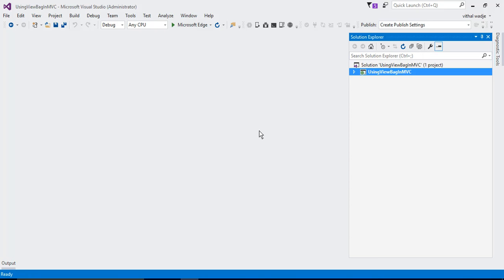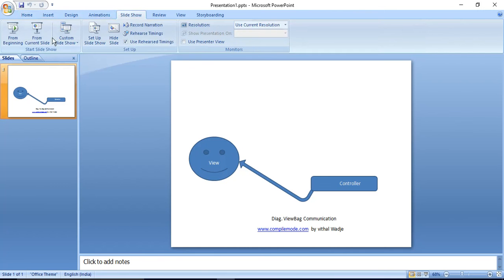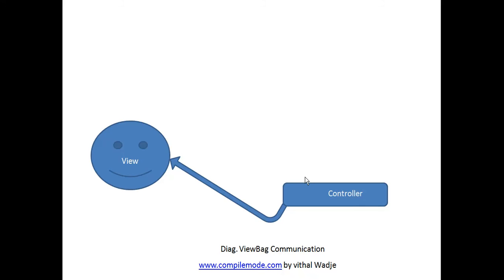Let us understand the first state management technique, that is ViewBag. From this diagram you might understand that ViewBag is used to pass data from controller to the view. It is used properly to pass data from controller to view. We will see how data is passed, how we can access it, and how we can declare it in one practical example.